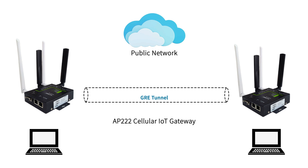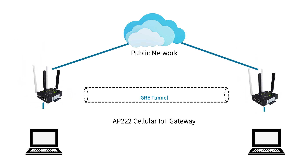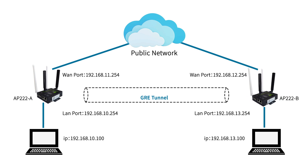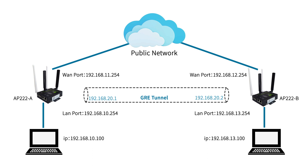First, let's connect all the devices according to this topology shown on your screen. We are using two AP222 gateways in this example — let's call them AP222A and AP222B. You can assign any private IP addresses to LAN ports of these gateways and their respective local network devices. However, the WAN IP addresses will be provided by your cellular connectivity provider. Finally, assign the virtual IP addresses of the GRE tunnel — these IP addresses can be assigned arbitrarily.